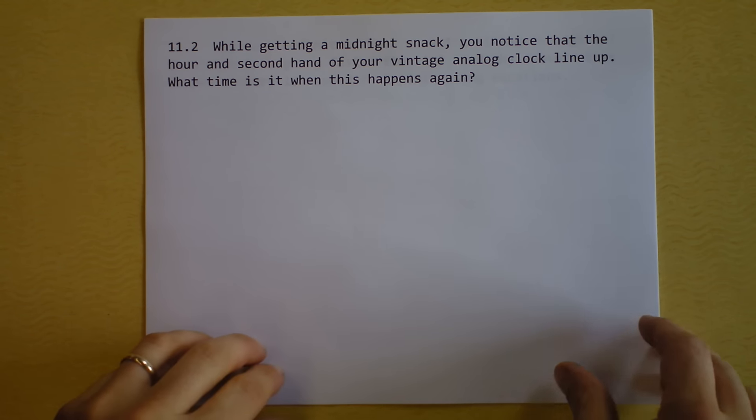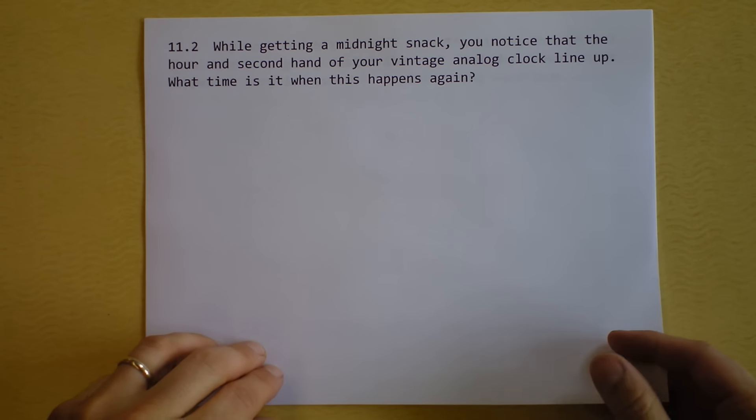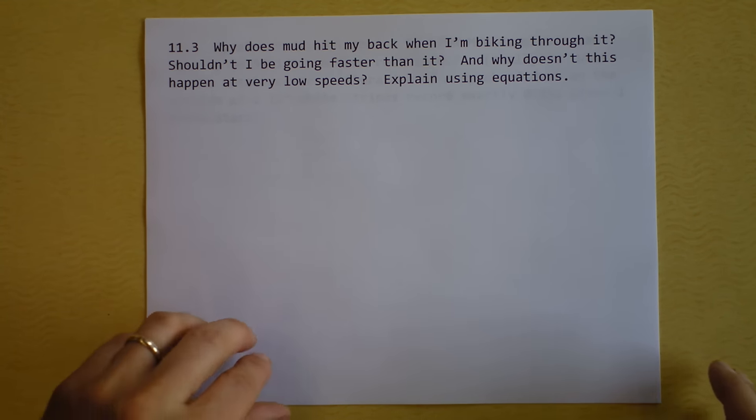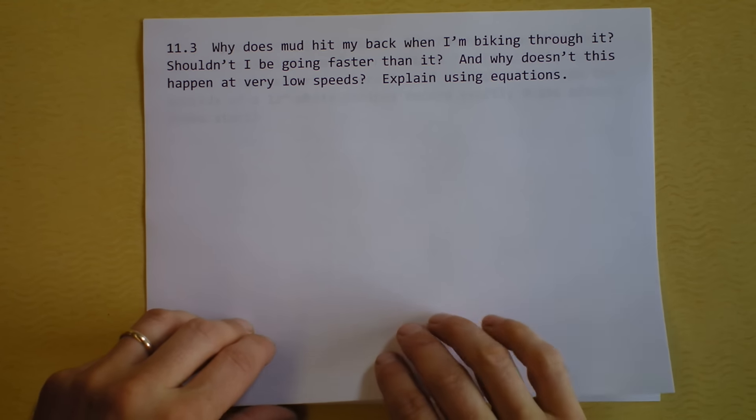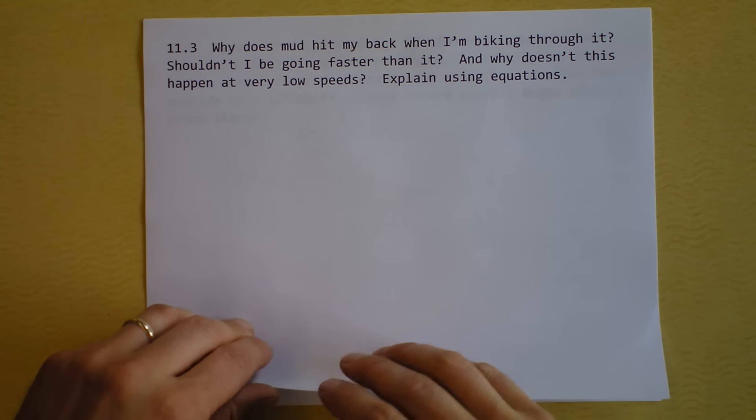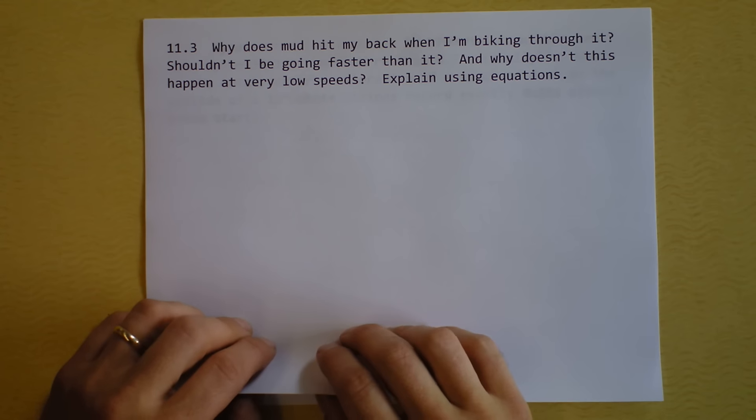Okay, so be careful with this and use Omega etc. Why does mud hit my back when I'm biking through it? If you've biked, you will notice that this happens. That doesn't make any sense because that means I'm going forward at some speed V, but the mud must be going even faster than that if it's catching up from behind and hitting my back. This is very annoying. It doesn't happen at very low speeds, and maybe we can begin to understand that now using equations. I'm looking for a paragraph explanation that has equations within it as well.